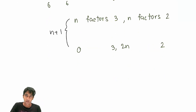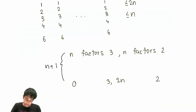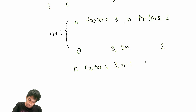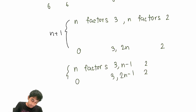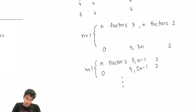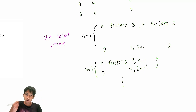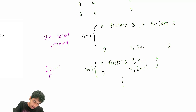That's n+1 possibilities because the exponent of 3 ranges from 0 through n. This holds true whether you have exactly 2n, 2n−1, or down to n total prime factors — in each case the count of valid (exponent of 2, exponent of 3) pairs is n+1. Here 'total primes counting multiplicity' means, for example, 2³ counts as 3 prime factors.